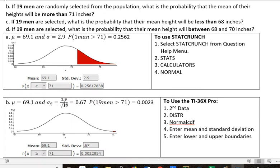And so we take the standard deviation that was originally given, which was 2.9. Up here, it was 2.9 because we're talking about one person. And then we divide by the square root of n. And the n is the number of people that we're talking about, which was 19. And so that gives us a new SEM, standard error of the mean, which is 0.67. And now we can find the probability that 19 men have average or a mean height greater than 71 inches.